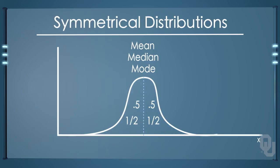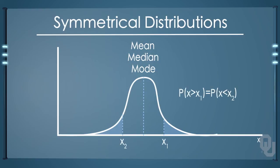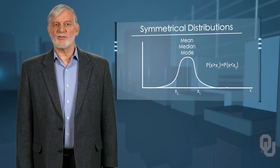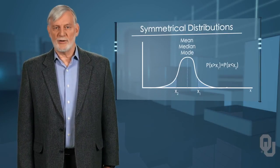We can go even further with a frequency distribution if it is symmetric. Imagine we move one unit from the mean in both directions. If we now shade in the frequency distribution at the tails, we can say that the probability of randomly drawing a value in the upper tail is exactly the same as drawing an observation in the lower tail. This fact will be of great help in the future, and again shows the value of frequency distributions.